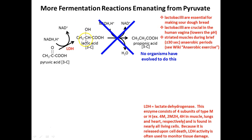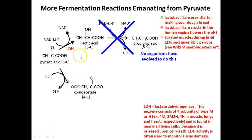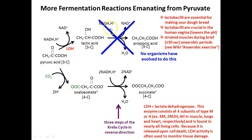Lactobacilli are crucial for the female vagina — this creates the acids that maintain the normal low pH associated with normal vaginal flora. We also produce lactic acid in our muscles under anaerobic conditions, which is not a good situation. From lactate you can go to propionic acid — organisms add carbon dioxide to oxaloacetate, an intermediate in the Krebs cycle. NADH is added to oxaloacetate, forming succinate, then propionate, using similar steps and enzymes from the Krebs cycle.